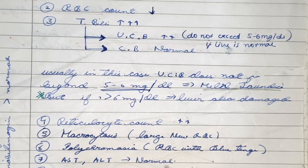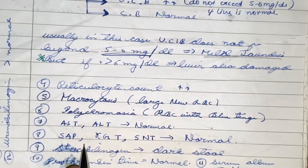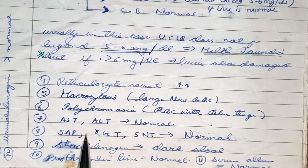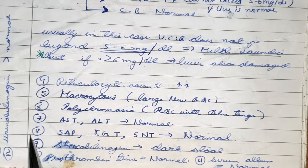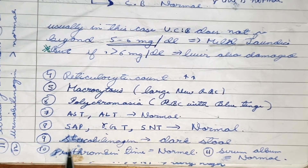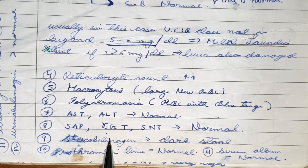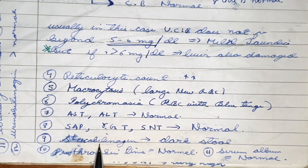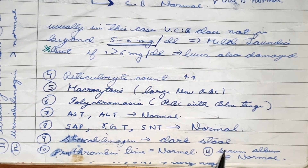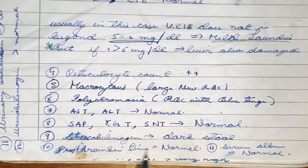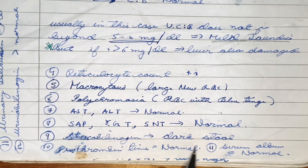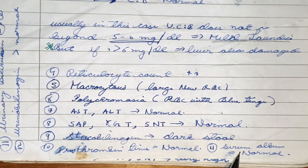AST and ALT levels are normal. Alkaline phosphatase, gamma-glutamyl transferase, and 5-nucleotidase are also normal. Stercobilin level increases because of the increased conjugation done by the liver, and there is presence of dark stools due to the increased stercobilin level.